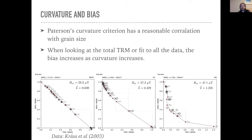The curvature data I'm showing come from magnetite powders of known grain sizes, increasing in coarseness from left to right. Someone gave these powders a magnetization and ran the experiment. You can see that curvature increases with grain size, and if you take an estimate using all temperature steps — fitting a line to everything — your estimate becomes more biased as curvature increases. The curvature criterion is useful because Greg Paterson in his 2011 paper showed it has a reasonable correlation with grain size in these powders.